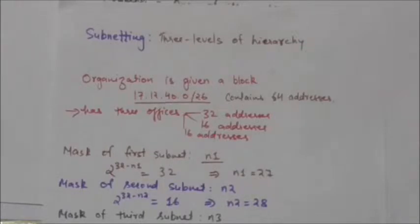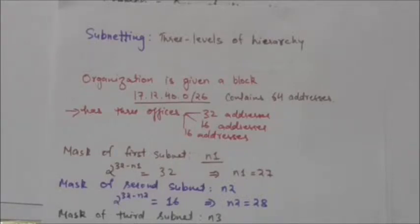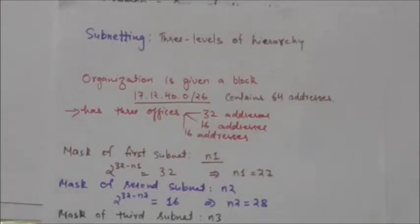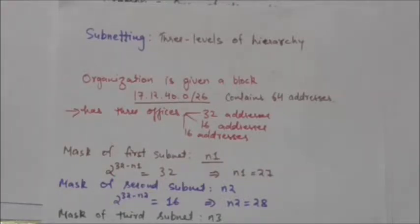Suppose an organization is granted a large block of addresses and wants to create clusters of networks called subnets. It needs to divide addresses between these different subnets. The rest of the world will see this organization as one entity, but internally there are several subnets. Messages are sent to the router address that connects the organization to the rest of the internet, and this router routes the messages to the appropriate subnets.